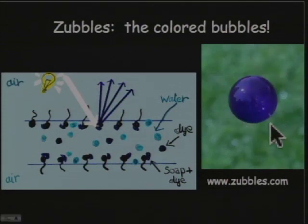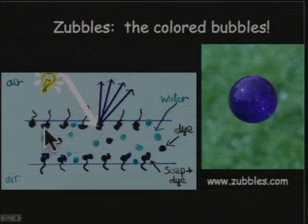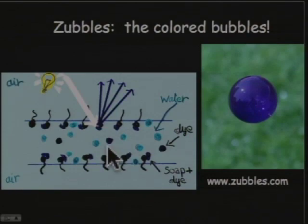And they use a dye that does not stain. This is a dye that sticks to the soap molecules at the surface. Here, the tadpoles represent the soap molecules, and you have these blue dots that represent the dye. And this dye is also of the right weight, so it is diffused homogeneously in the sandwich of water.